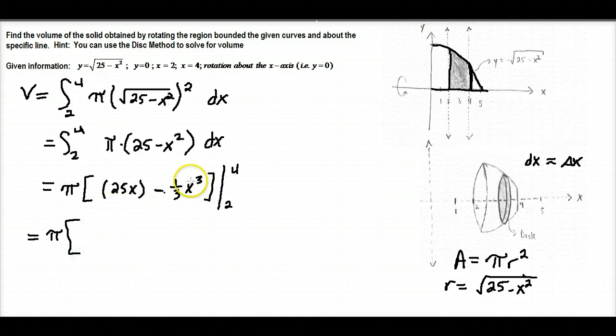And so here we just need to do calculations now. So we come and we'll plug in 4 in for x here. 25 times 4 minus one-third 4 cubed. And so that will be the first term, now we subtract and plug in the 2s. So it'll be 25 times 2 minus one-third, and then that would be 2 cubed.